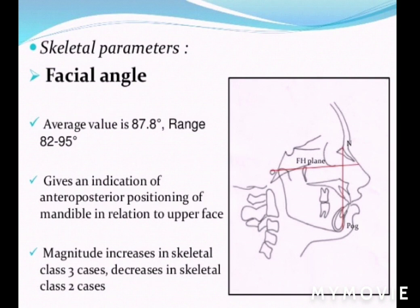The first skeletal parameter is facial angle. There is a line joining the point nasion to pogonion, and another line joining the point porion to orbital, known as the FH plane. The intersection of both these lines denotes the facial angle. The average value of facial angle is 87.8 degrees, and it gives an indication of the anterior-posterior positioning of the mandible in relation to the upper face.